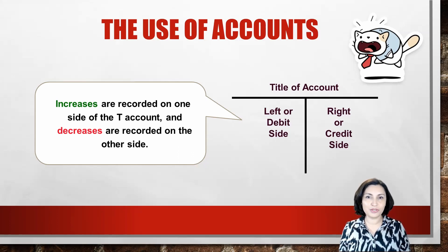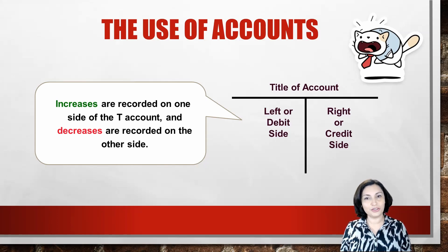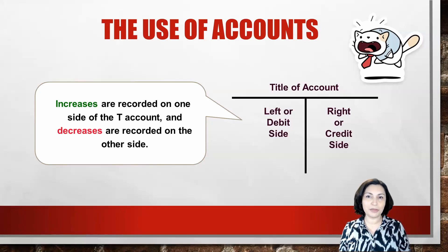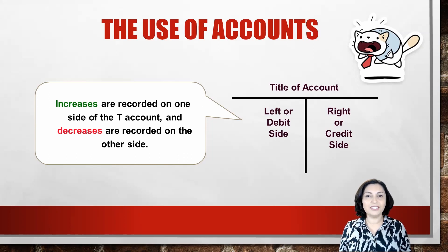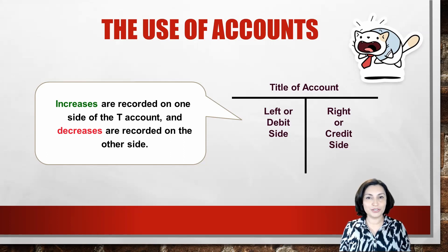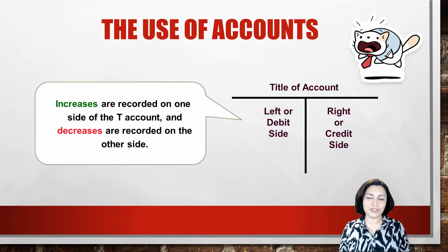As scary as T-accounts may sound for folks outside of accounting, they are actually very helpful and easy to use. By using T-accounts, we can quickly analyze transactions before entering information in the journal. The left side of a T-account is always called the debit side, and the right side is always called the credit side. This terminology comes from the time when the double entry system was first developed, and these terms are still used as a matter of convention.